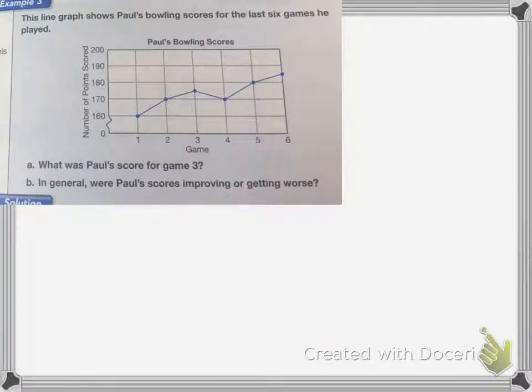And this next one, it's a line graph, and the line graph shows Paul's bowling scores for the last six games he played. So let's know what Paul's score was for game three. On the left, it tells me the number of points scored, and the bottom tells me what I'm measuring, so the games. So for game three,